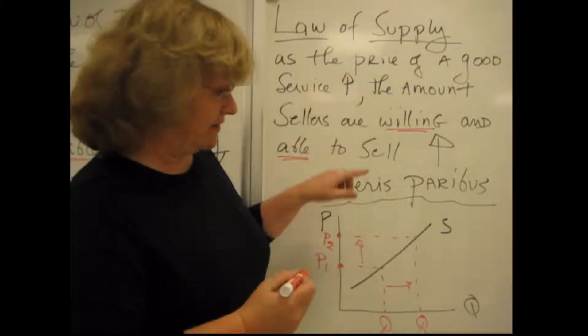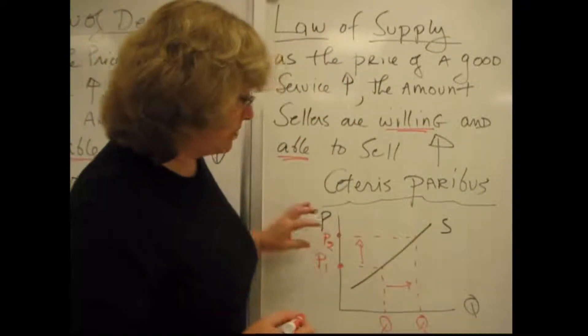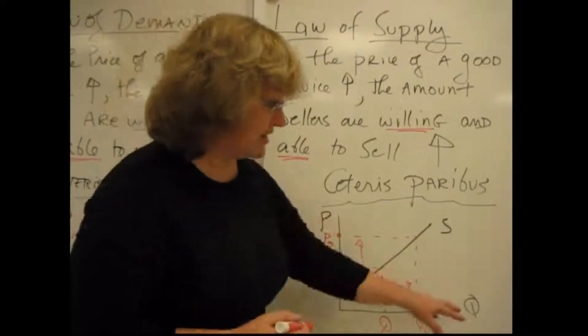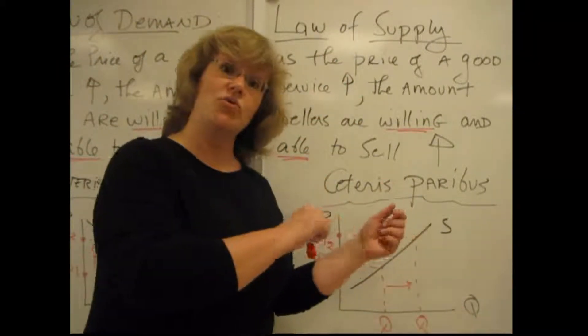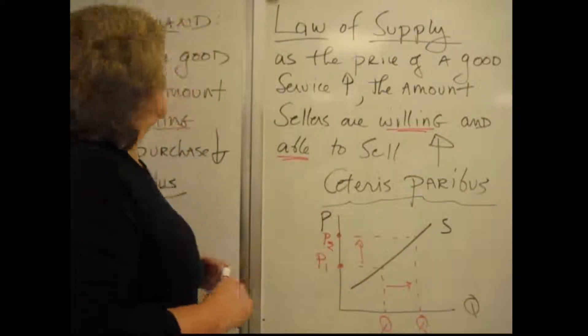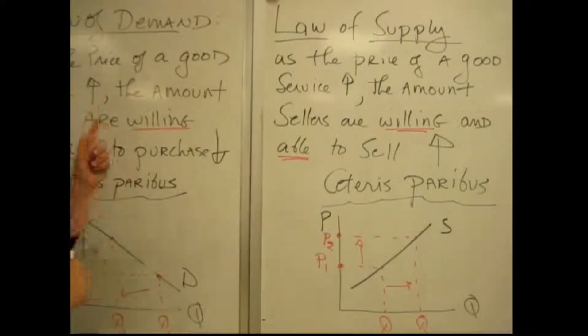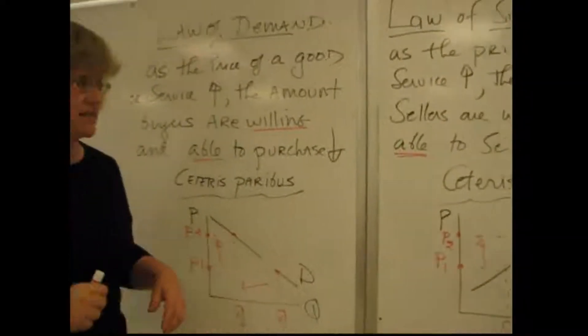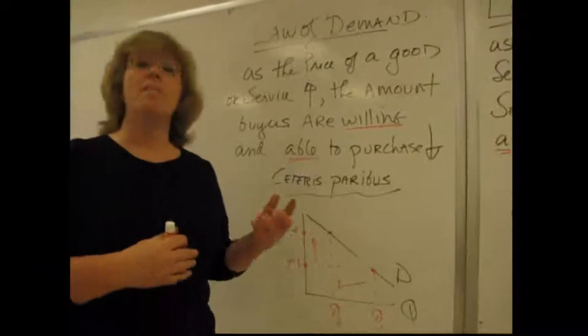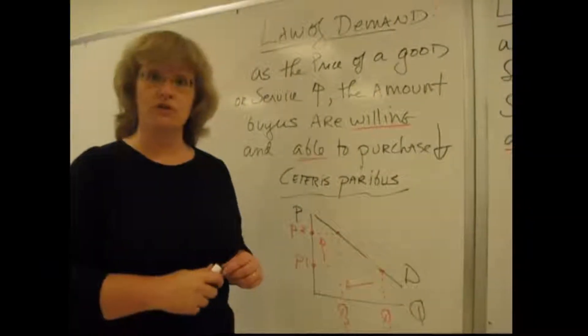So we have the Law of Supply — a relationship between price and quantity from the seller's point of view — and the Law of Demand — the relationship between price and quantity from the buyer's point of view.